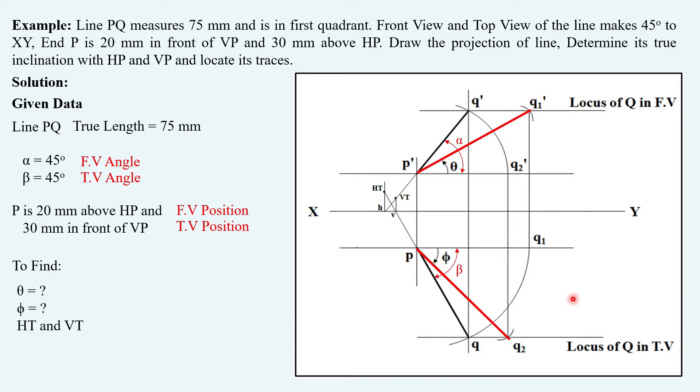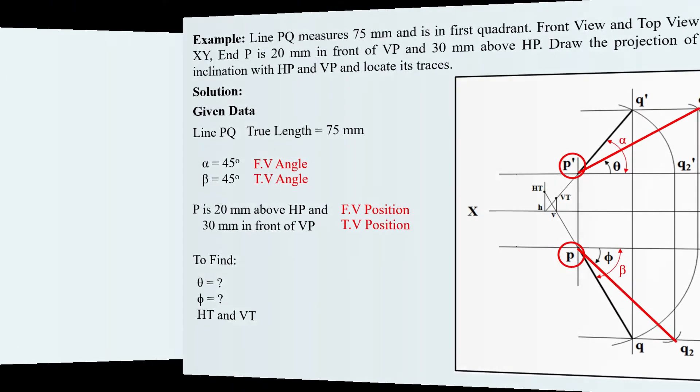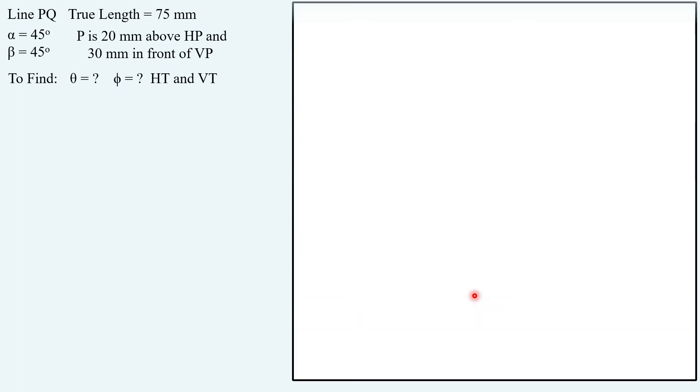If I put these things here, I have this front view and top view location of point P. We have the angle alpha and beta. Let's draw the solution now.